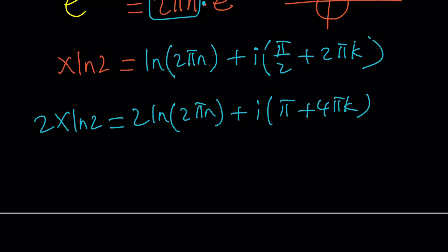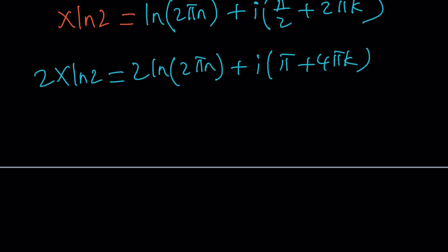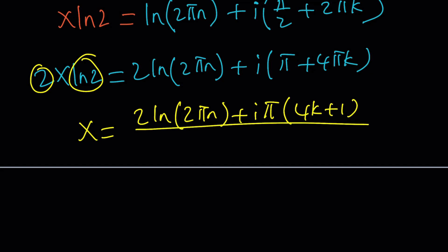And it's going to give us 2 ln 2 pi n plus i times pi plus 4 pi k. So, I get rid of the fraction. Now, I can go ahead and divide both sides by 2 ln 2. That's going to give me the x. So, it's going to be 2 ln 2 pi n plus i times. Well, if you want, you can factor out a pi here. No big deal. I mean, you can do it. Let's do it. Fine. So, we can write this as i pi multiply by 4k plus 1, which is, again, an integer because k is an integer. And all of that is going to be divided by 2 ln 2.